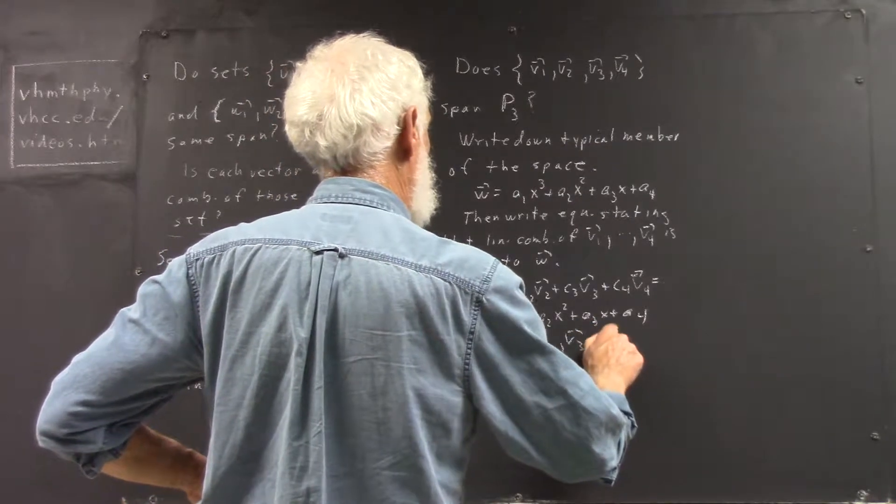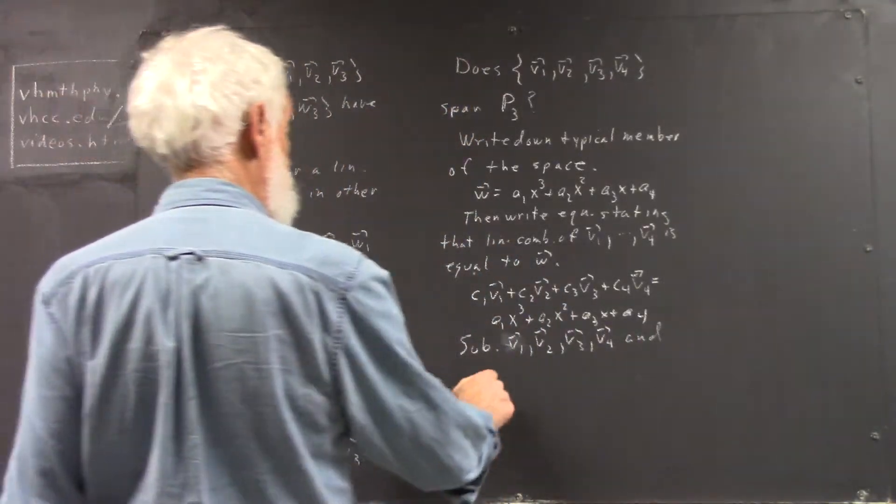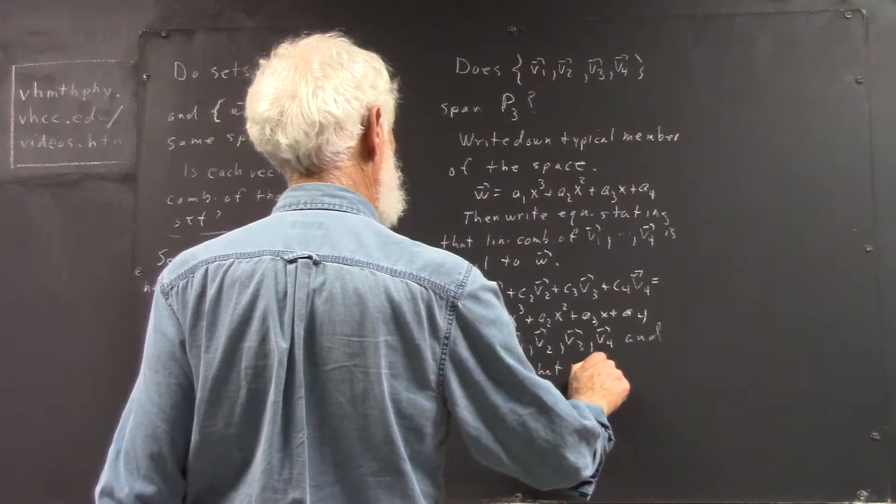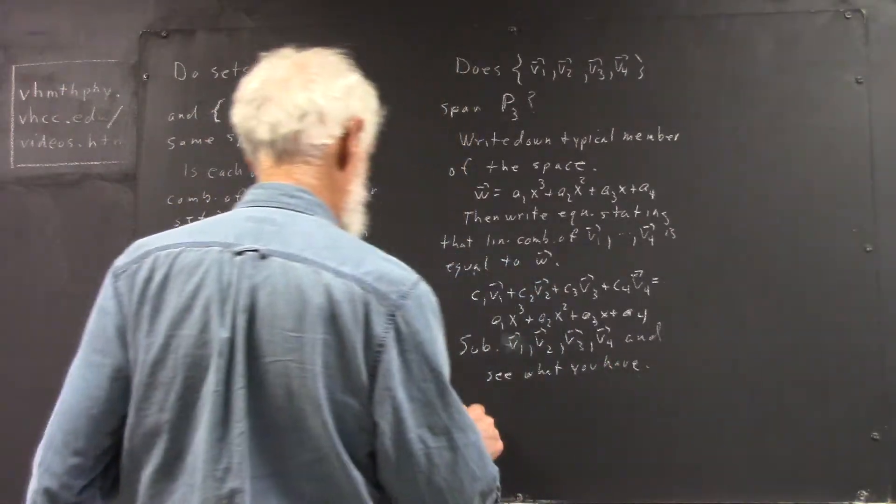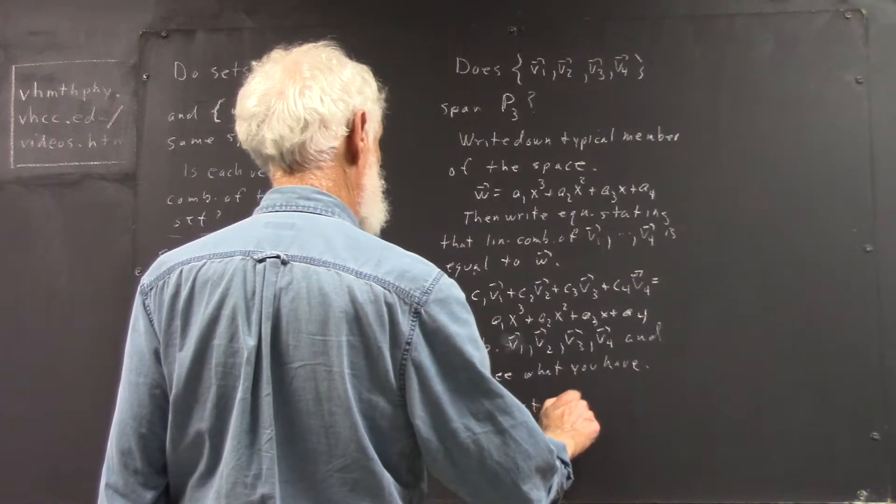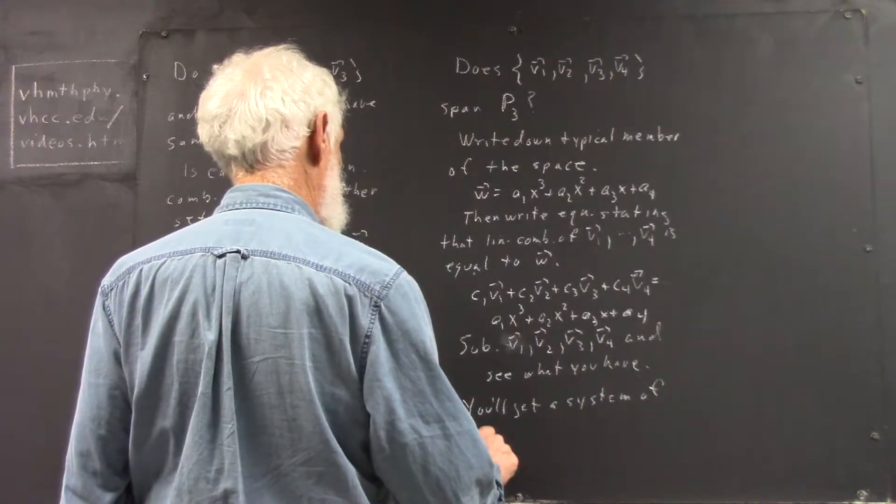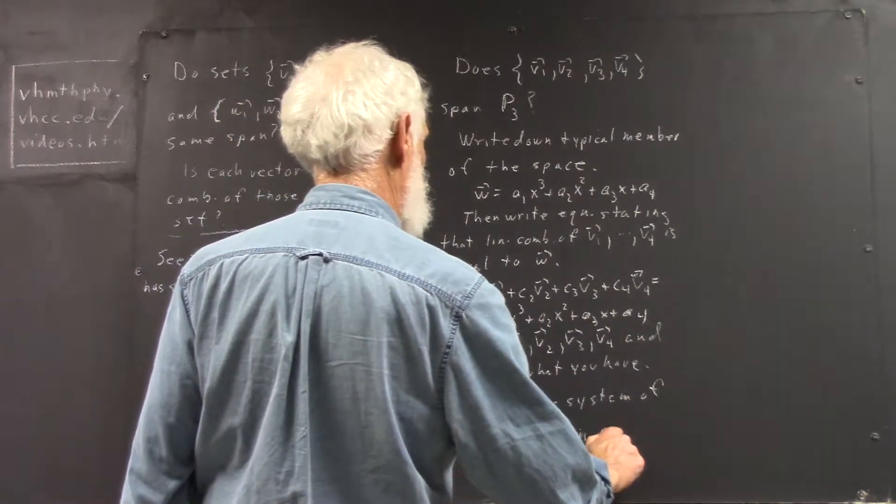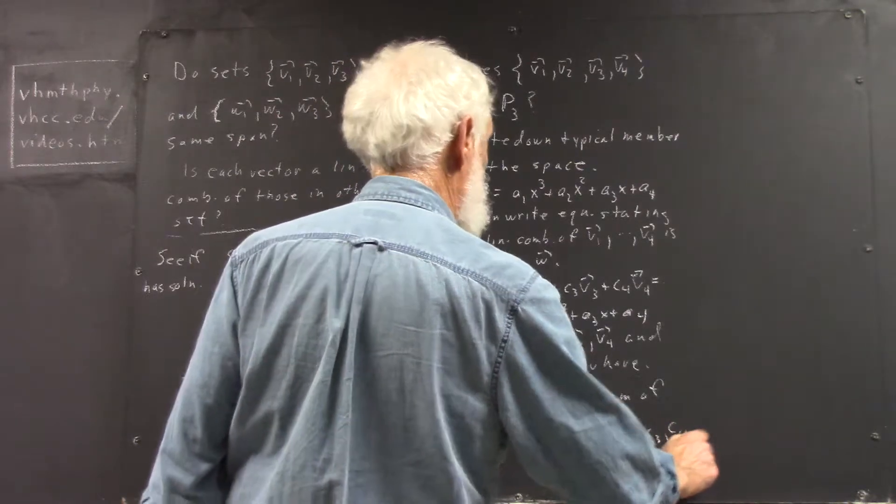Then, substitute your V1 through V4 and see what you have. And what you have will be a system of equations. You'll get a system of linear equations in C1, C2, C3, C4. You'll get four unknowns.